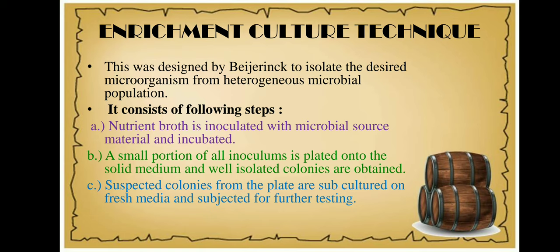In this way, we identify whether an organism is producing enzymes or not. If I have to detect amylase producers, I prepare a starch agar plate. For protease producers, I prepare a medium containing a protein like casein. For cellulase producers, I use a medium containing cellulose. For lipase producers, I prepare a medium rich in lipids. This is how the enrichment culture technique is performed.